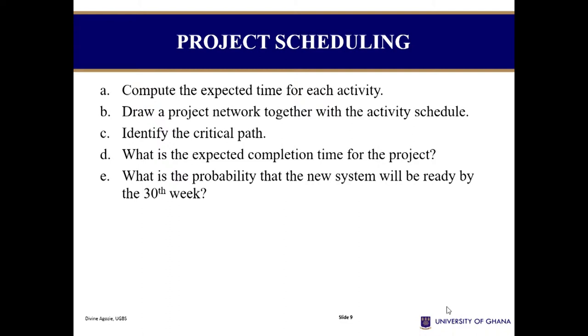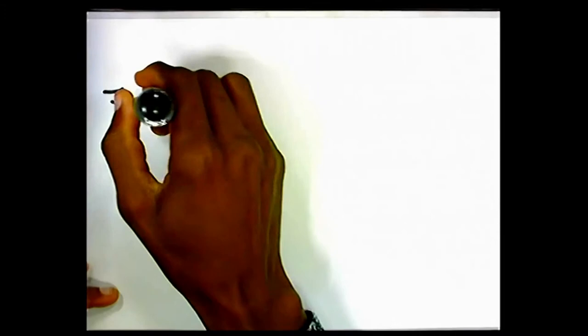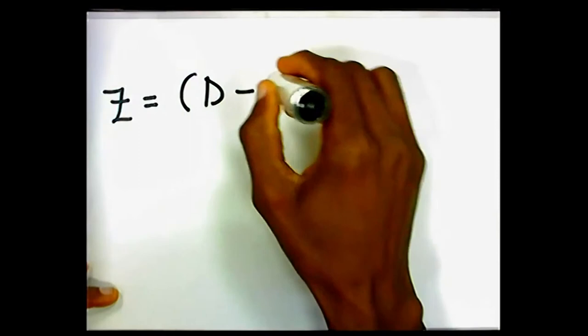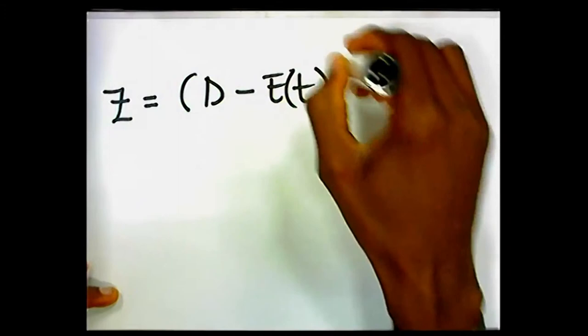The last part is asking us to find the probability that we would complete our project in 30 weeks. Like we said, this has to do with an issue of probabilities. And we said we would have to convert this into standard form where we say our d to our expected time.